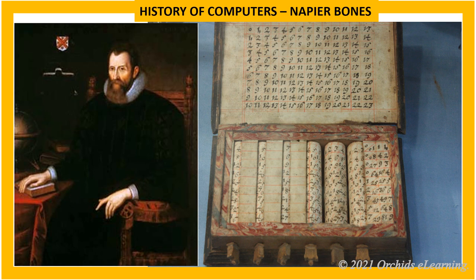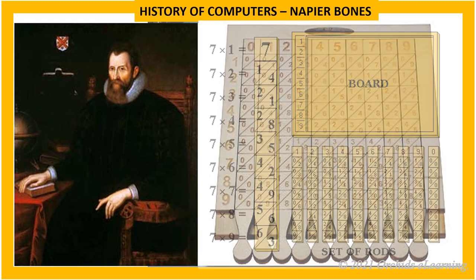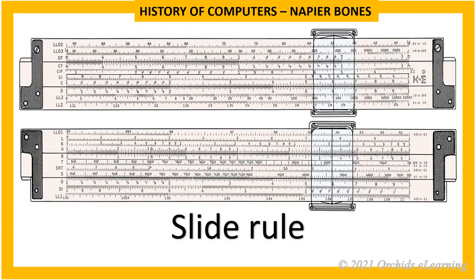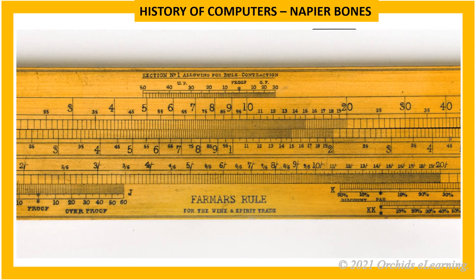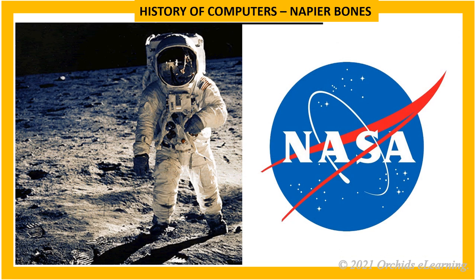In this device, the numbers 0 to 9 were marked on a set of ivory sticks. These numbers were marked in such a way that the product of any number could be found by placing the sticks side by side. Napier's invention also led to the invention of the slide rule, first built in England in 1632. It was used by NASA engineers for programs to land humans on the moon, such as the Apollo programs.